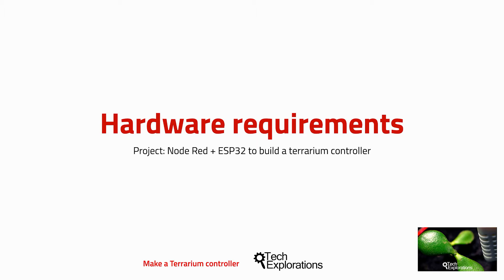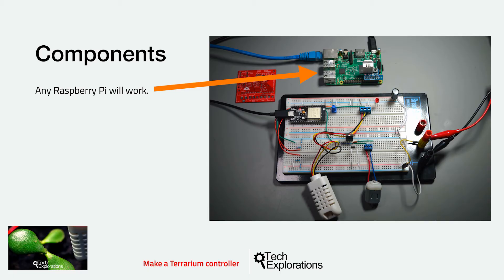I also chose components that are easy to find no matter where you are in the world. Almost everything I'll show you in this lecture is generic, meaning that you can get parts from different vendors at very low costs. The only exception is the Raspberry Pi, for which there is no 100% compatible alternative to the genuine board.